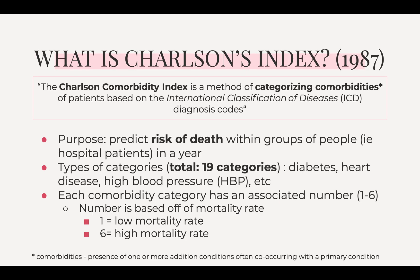So what is the Charlson's index? The Charlson's comorbidity index is a method of categorizing comorbidities — the presence of one or more additional conditions often co-occurring with a primary condition — of patients based on the International Classification of Disease diagnosis codes. Basically, this index puts different categories of conditions that someone may have that would cause a higher mortality rate, such as diabetes, heart disease, and high blood pressure.